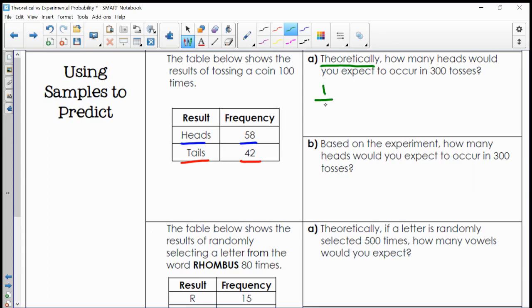Remember that theoretical means what should happen. In theory, when I go to toss this coin, I should have a one out of two chance of tossing a head. Which means no matter how many times I toss this coin, I should always expect that about 50% of the time I should be getting a head. So in this scenario, half of the time I should be tossing a head.